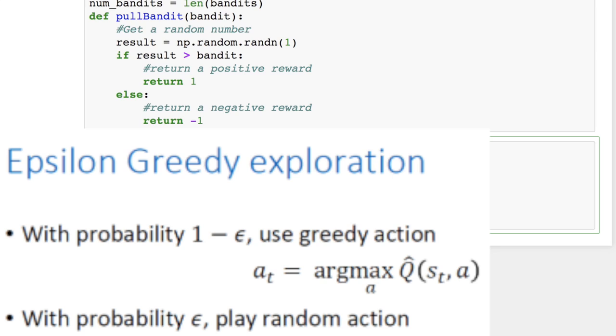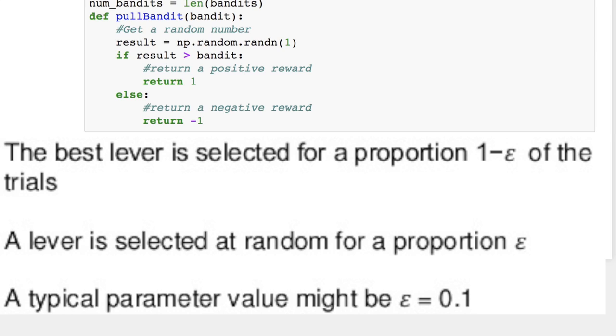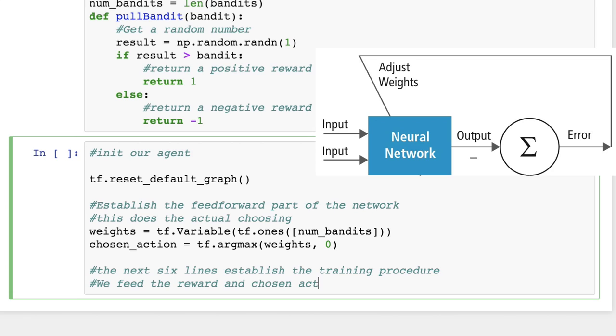When we update our network, we'll use what's called an Epsilon Greedy Policy. This is a way of selecting random actions with uniform distributions from a set of available actions. Using this policy, either we can select random actions with epsilon probability or we can select an action with 1 minus epsilon probability that gives maximum reward in a given state. We'll define epsilon as 0.1. It's the chance of taking a random action. Basically, most of the time our agent will choose the action that corresponds to the largest expected value, but sometimes with epsilon probability it will choose randomly. So this way it can try out different arms to continue learning about them.